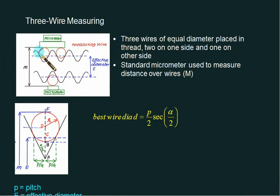In the three-wire measuring process, as shown in the figure, these are the threads you want to measure. Wires of equal diameter are placed between the crest and root. Above that, we have a micrometer so we can easily measure the vertical distance M. For this method and GATE, remember one formula: the best wire diameter.